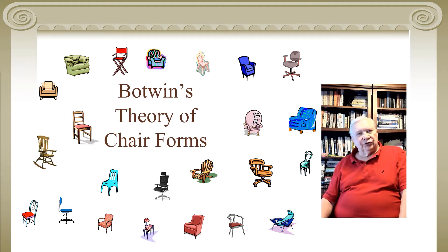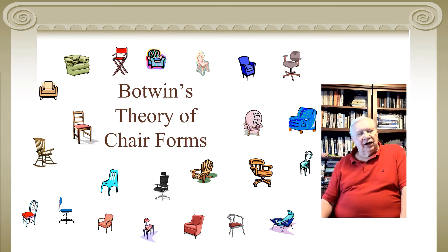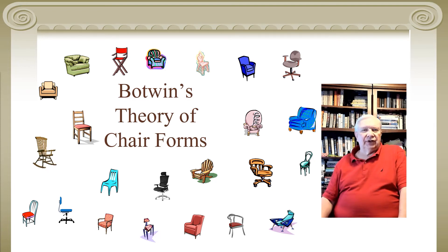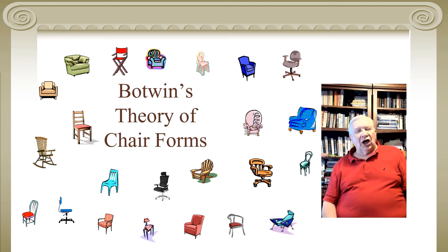Rosch used prototypicality for all kinds of things. If you think about birds, some birds are better examples of birds than others. If I say 'think about a bird,' you probably think of a robin or sparrow — that's most likely what comes to mind. I would bet very few of you first think of an ostrich or a penguin.